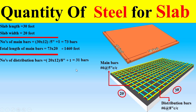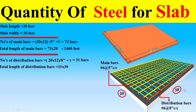Now dear students, to find the total length of the distribution bars, as you can see the length of one bar is 30 feet. So I will multiply 31 by 30 feet, which gives the total length of the distribution bars.